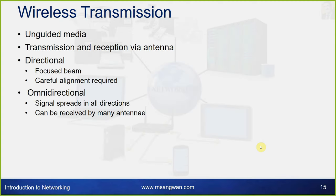Wireless transmission uses unguided media with transmission and reception via antenna. There are two types: directional, which uses a focused beam and requires careful alignment; and omnidirectional, where the signal spreads in all directions and can be received by many antennas — as used in DTH services like Tata Sky and Airtel for digital transmission of TV channels.